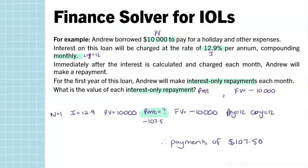A reminder: when writing monetary answers, always go to two decimal places — so $107.50, not forgetting the 50 cents. There aren't a huge number of examples for interest only loans; it's more important to understand the key properties of an interest only loan so you can find shortcuts to answer those types of questions.